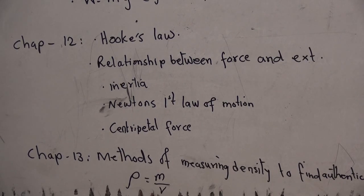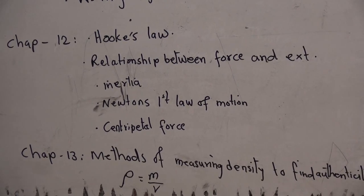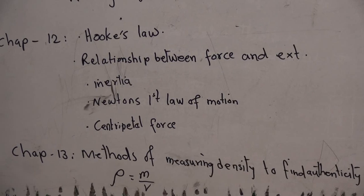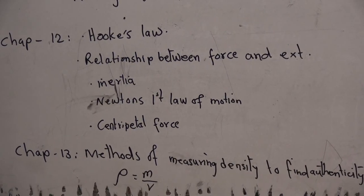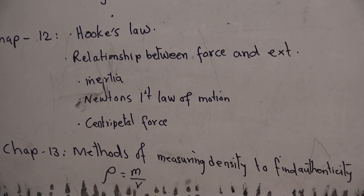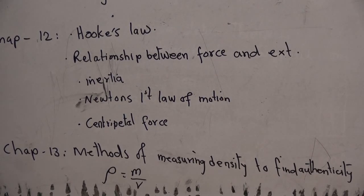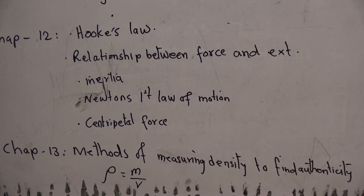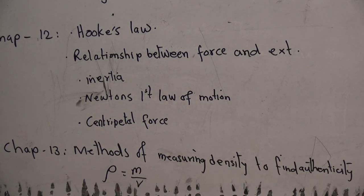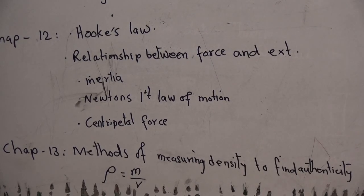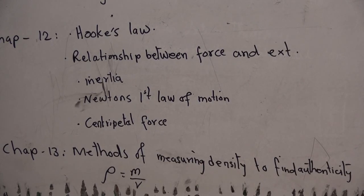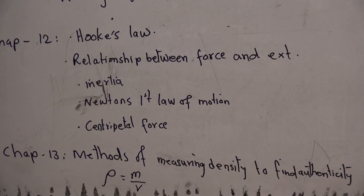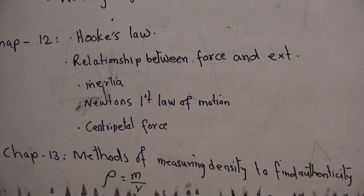And from chapter 13, you will have methods of measuring density to find their authenticity. You already have done this in the class. So follow your classwork notebook and your homework notebook. Here, you have to use the formula rho equals to mass by volume. Use density equals to mass by volume to find the density. You also have to go through all the definitions from the chapters. And remember one thing, since you will have creative questions, you have to actually read the chapters thoroughly for everything.